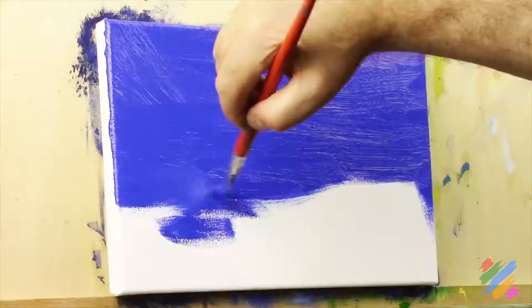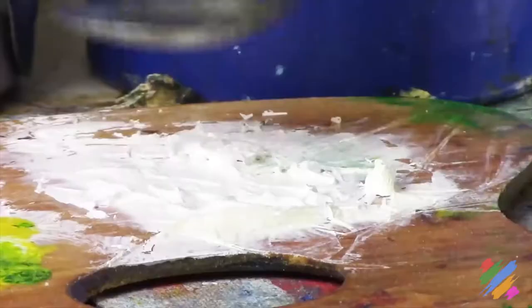As we said, mediums are transparent fluids. Their job is to trap the pigment, stick it to the support, and then become solid.